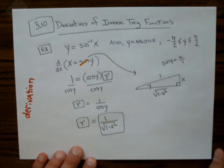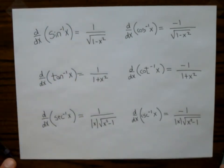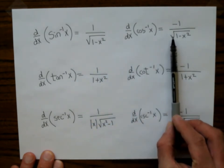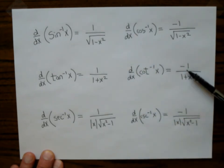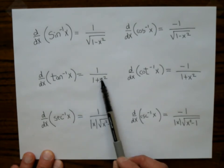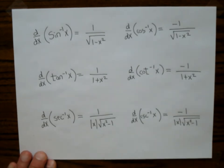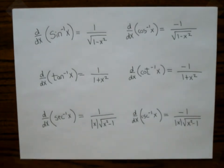The other five inverse trig functions can be derived the same way. We'll take a look at a table of derivative formulas. The cosine inverse almost looks the same as the sine inverse except there's a negative. In fact the three co-functions all have negatives. The tangent inverse does not have a square root — it's 1 over 1 plus x squared, and that one is seen more often. Then there's cotangent, secant, and cosecant inverse. There's a handout available on the website with all the derivative formulas.